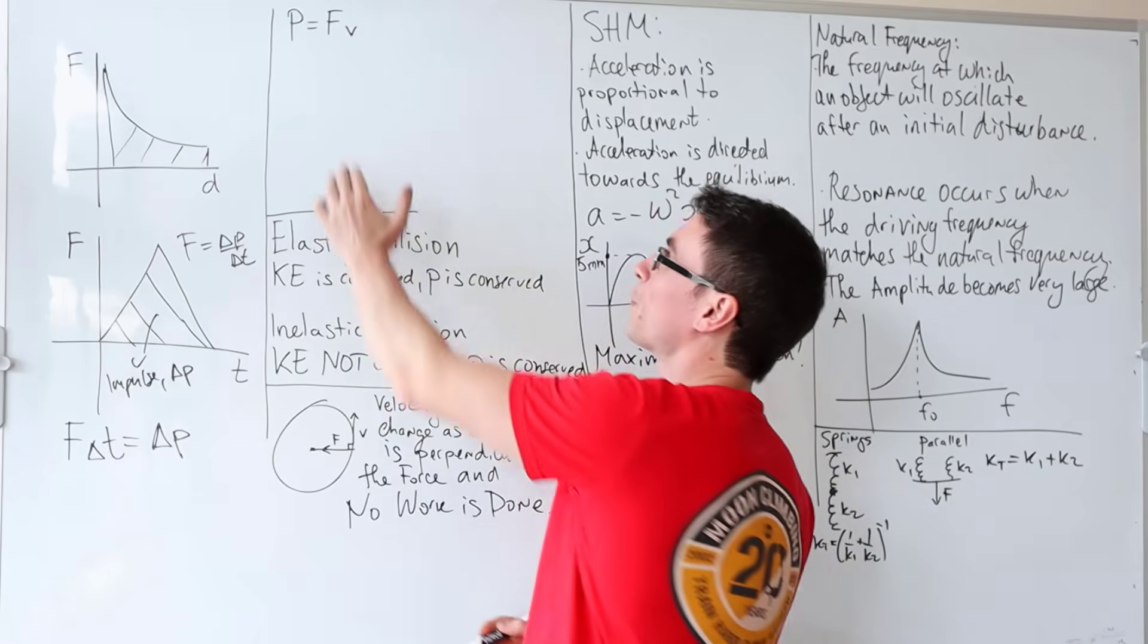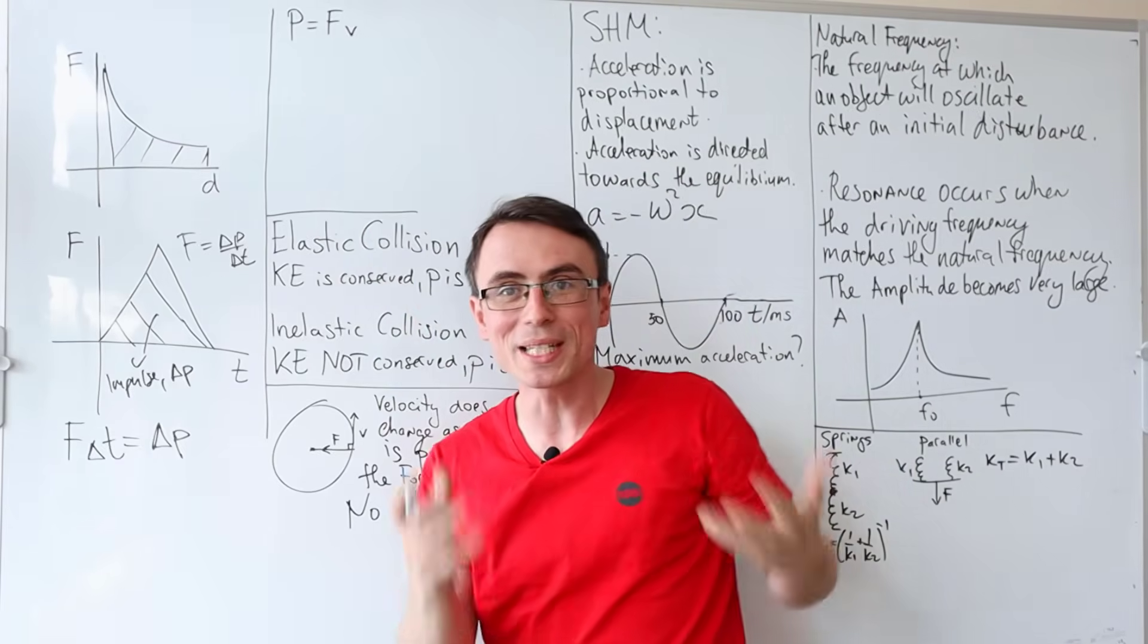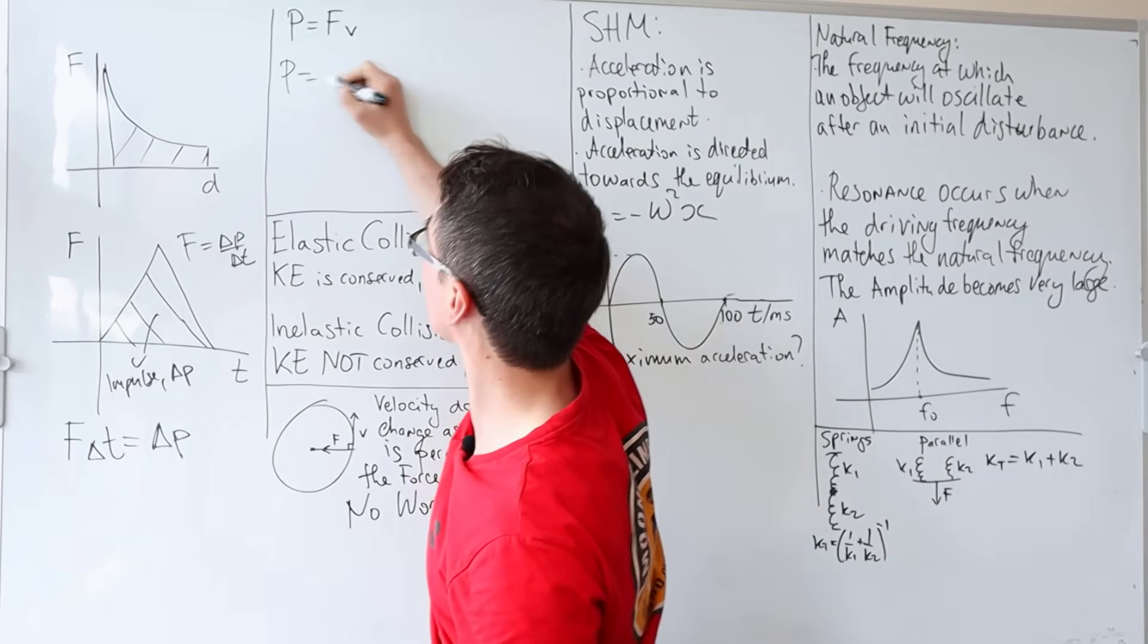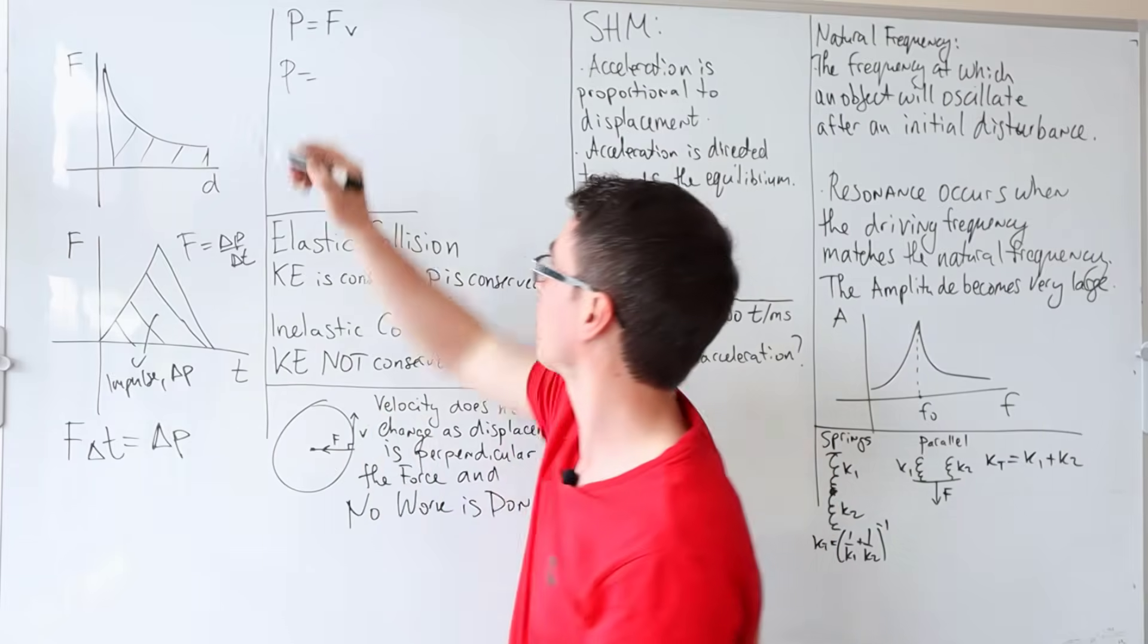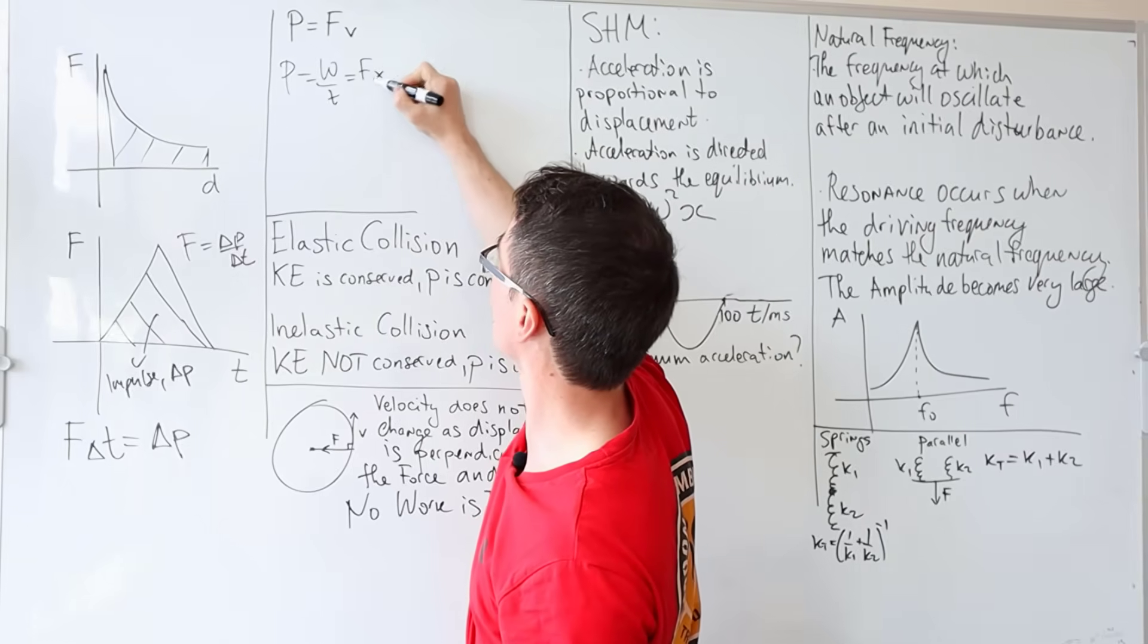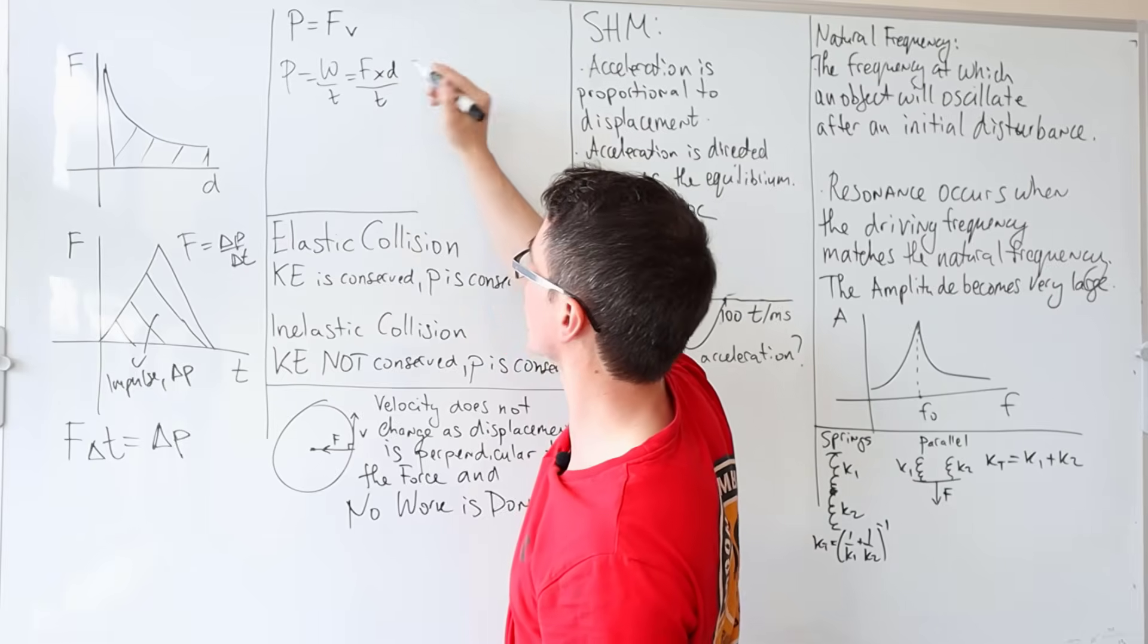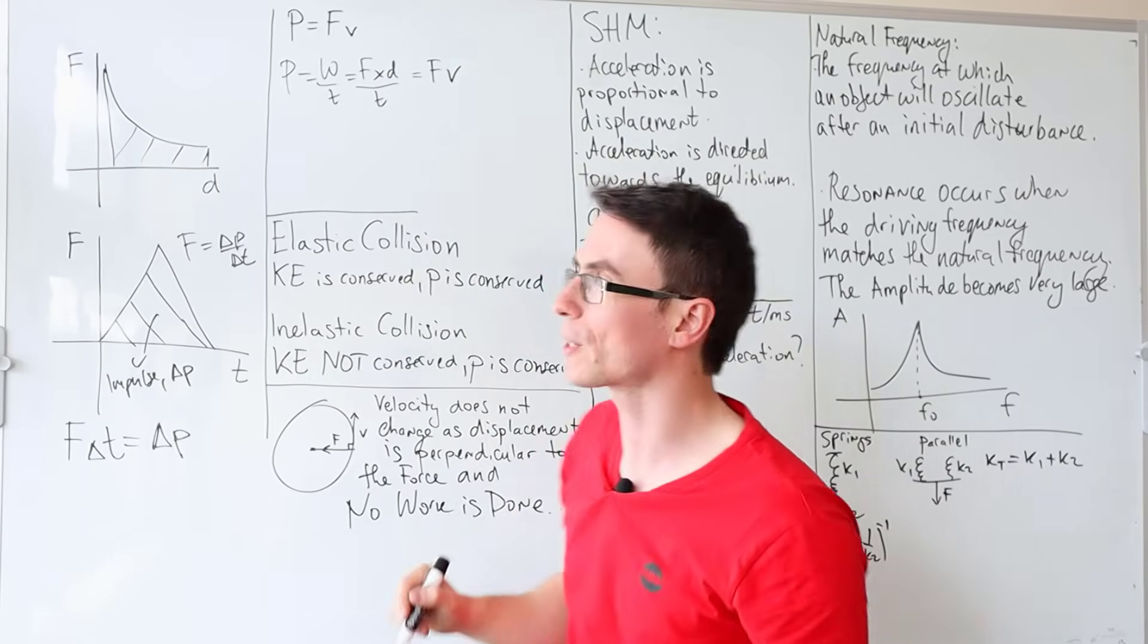Here's another really useful equation. Power is equal to force times velocity. We need to be able to derive this equation. Remember that power is equal to work done or energy per unit time. So if the work done equals force times distance, distance over time equals force times velocity.